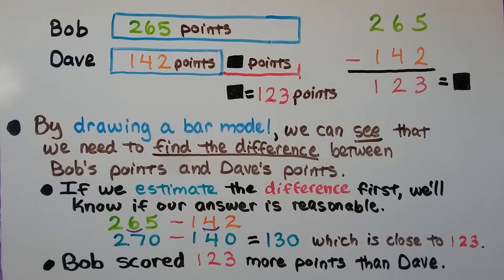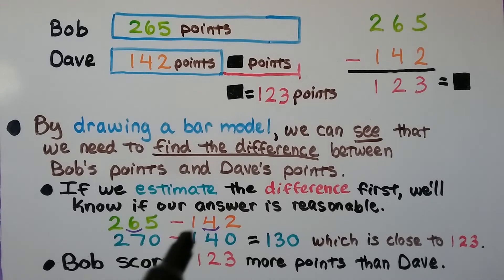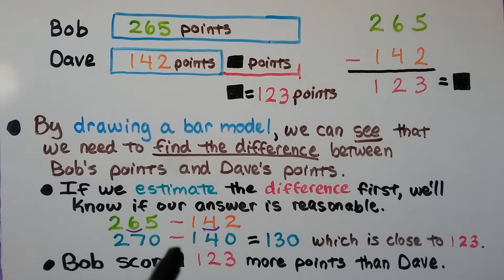If we estimate the difference first, we'll know if our answer is reasonable. We round both the minuend and subtrahend to the same place value. If we round to the nearest tens place, we would get 270 minus 140, and that's equal to 130, which is close to 123. Bob scored 123 more points than Dave — that's the difference between their scores.